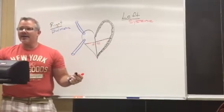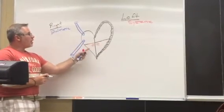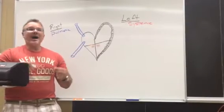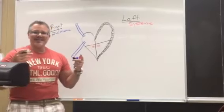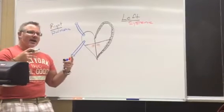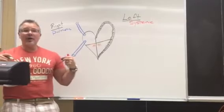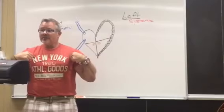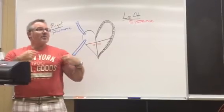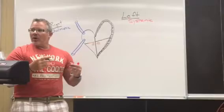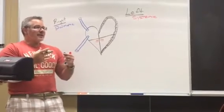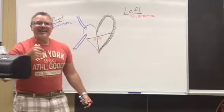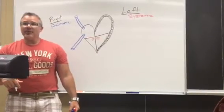The right side is not working too hard because it's designed to pump blood that is not carrying oxygen — deoxygenated blood — into the lungs. It's only going from the heart to the lungs, so it's not pumping aggressively. But the left side of the heart is designed to pump all of that oxygenated blood to all of the systems, including the great vessels.